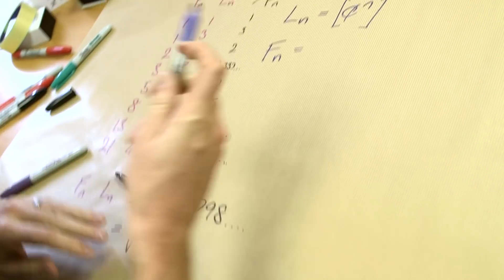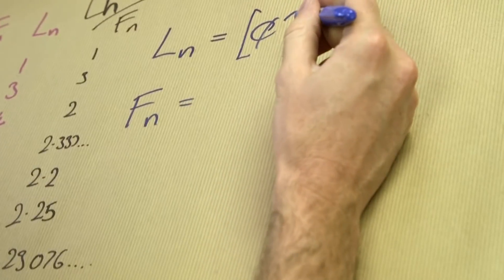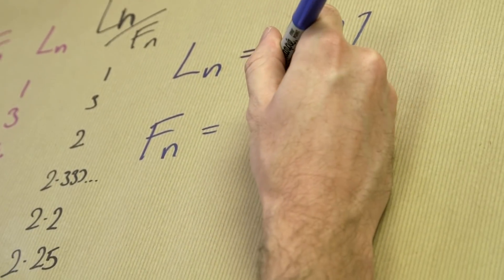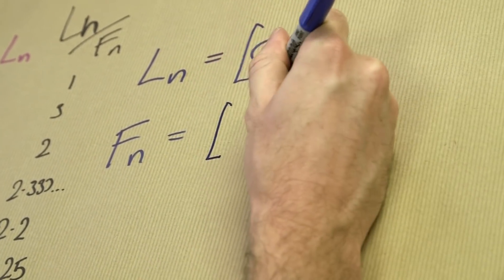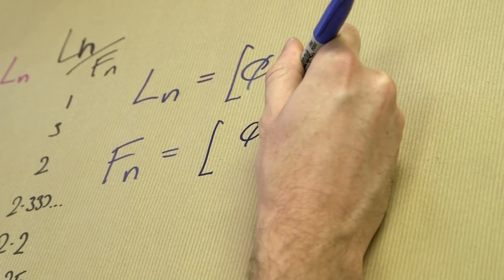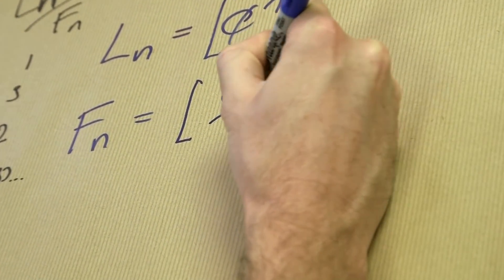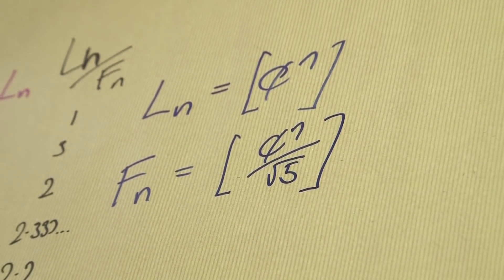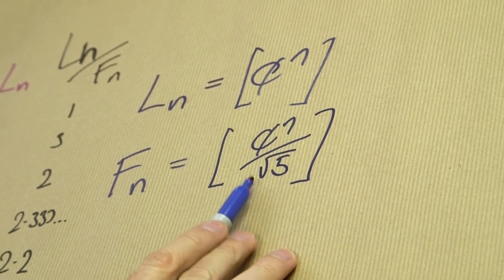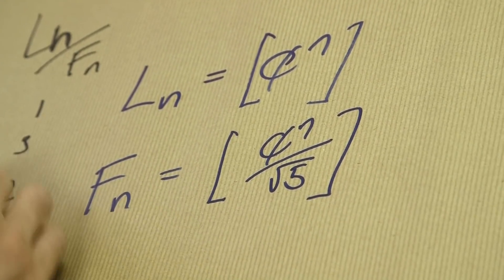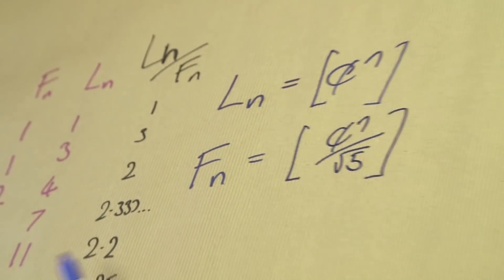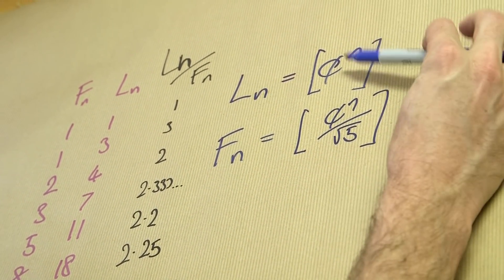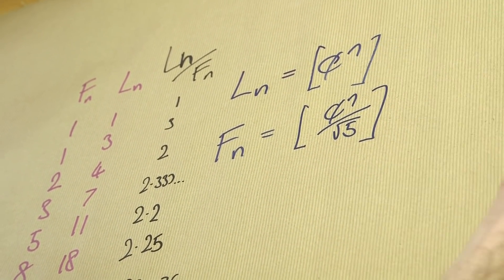It turns out that's all you need to fine-tune this to give you the Fibonacci numbers. It is just the golden ratio to the n, divided by root 5. And that's it. So this is the formula which generates all the Fibonacci numbers using the golden ratio and rounding — just like the one I was using for the Lucas numbers.